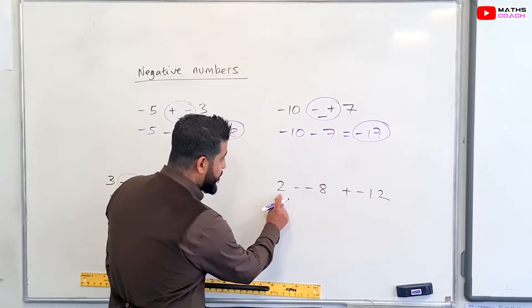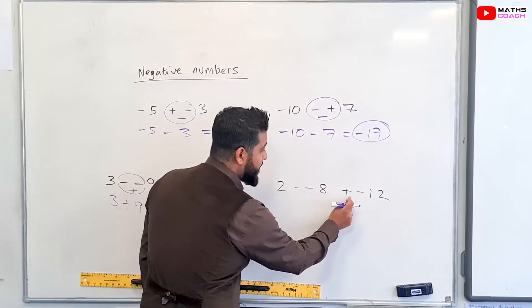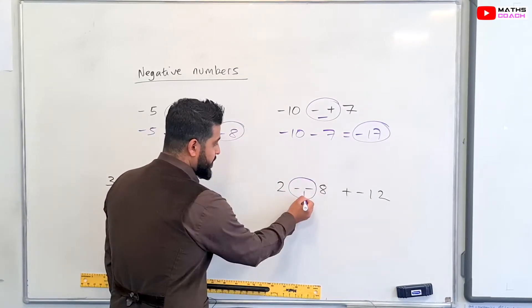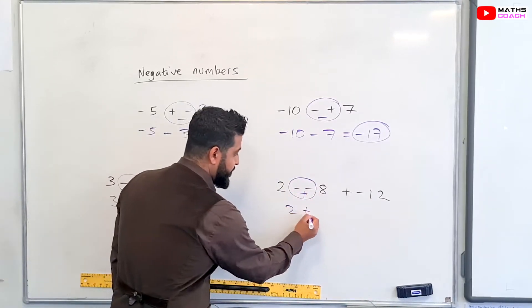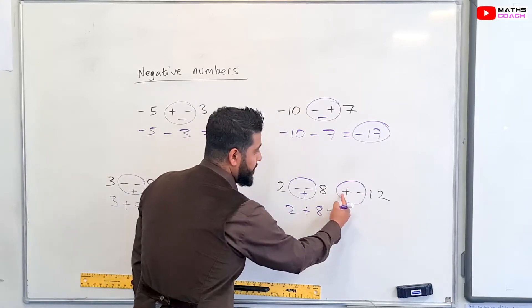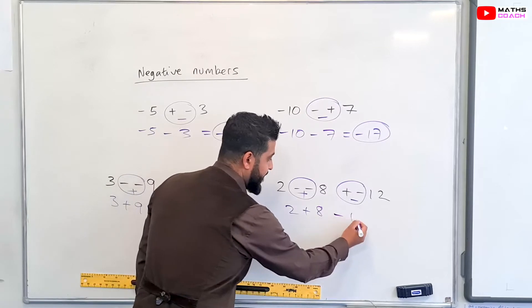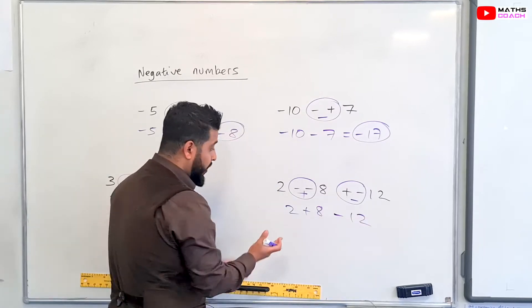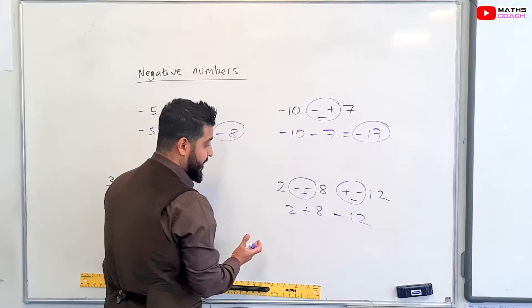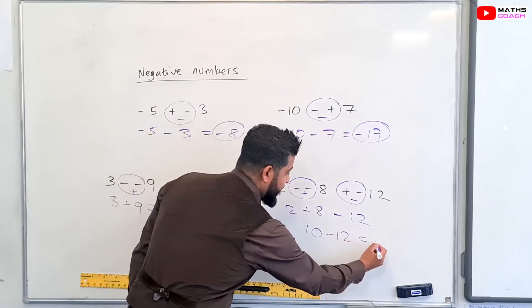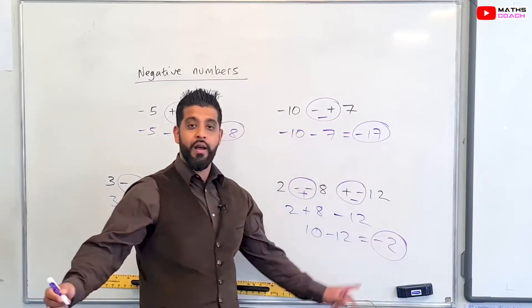So onto this last one, we've got two minus minus eight plus minus 12. So once again, just like before, we've got two negatives. So that will become a positive. So you end up with two plus eight and we've got plus and a negative. The negative is dominant. So the negative will come down here and minus 12. Now we just add and subtract as we go along. So two plus eight is equal to 10. 10 minus 12 is equal to minus two. And that's your answer.